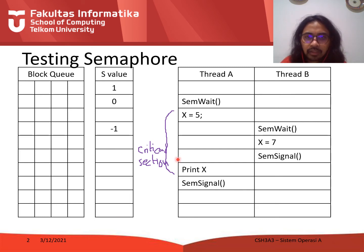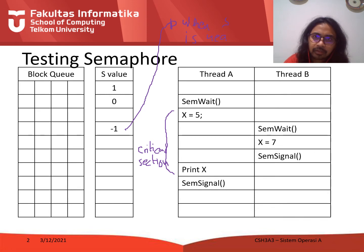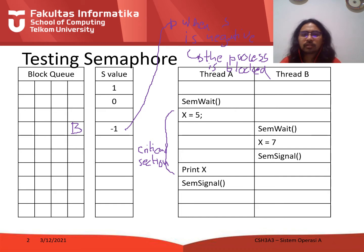Thread A runs until x equals 5, and then a context switch happens. Thread B executes and decrements the s value to become minus 1. When s is negative, the process is blocked.